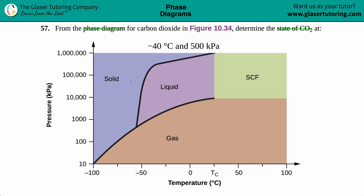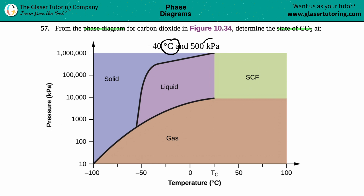This phase diagram may look a little intimidating, but it's as easy as just reading a regular x and y graph. We have x and y coordinates — the x-axis is in temperature (degrees Celsius) and the y-axis is in pressure (kilopascals). Conveniently, they gave us the same units we're searching for, so we just have to find negative 40 on the x-axis.